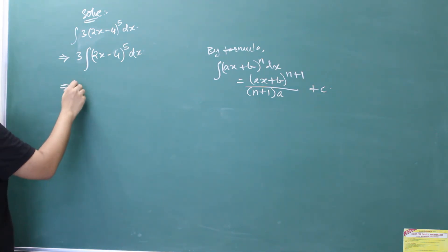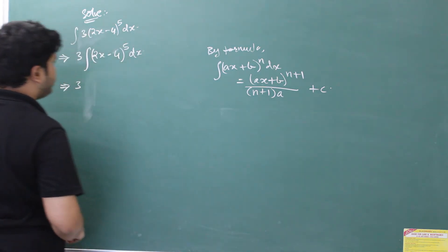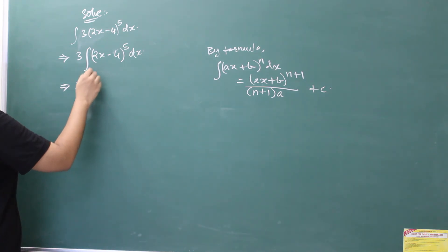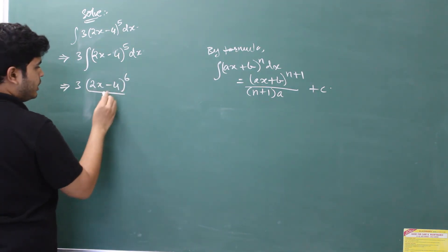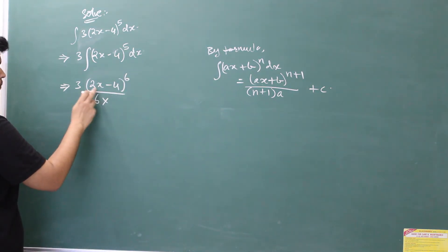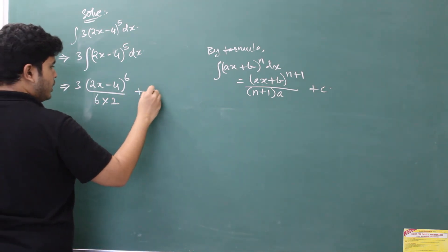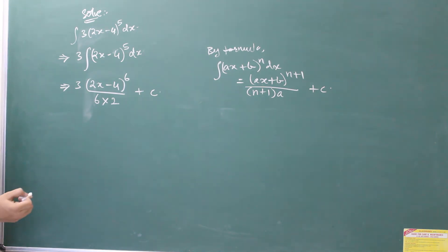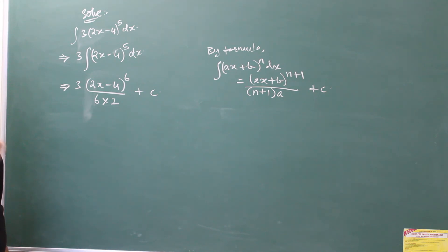Applying that formula over here, you will have 3, integral sign will go since we are integrating now. You will be left with 2x minus 4, you will add 1 in the power, that's why power becomes 6 divided by 6 into what is coefficient of x? It is 2. So you have to multiply by 2 in the denominator. And plus c, plus c is constant of integration. In indefinite integration, you have to always put plus c in the solution part.